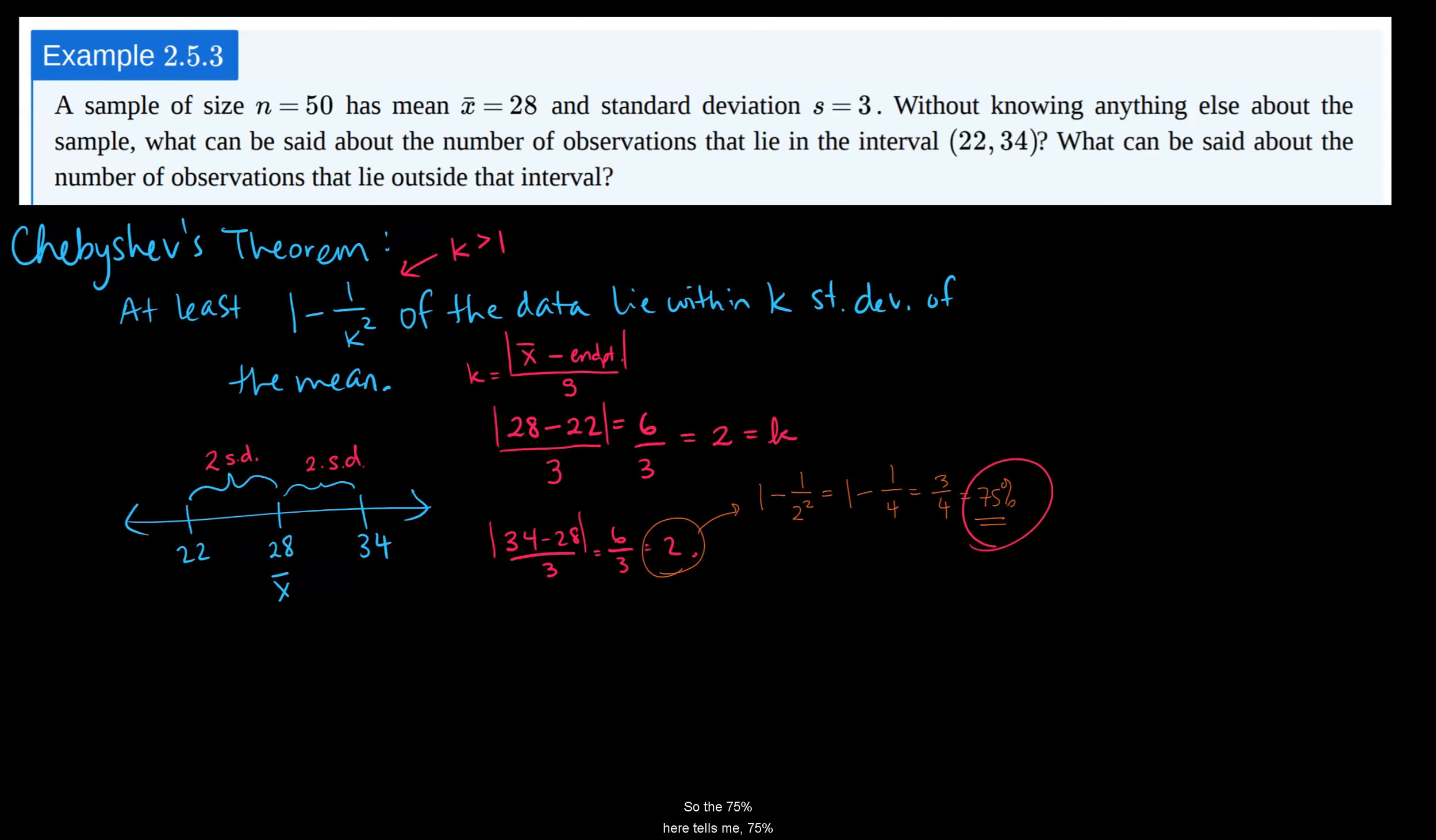So the 75% here tells me 75% of the data lies between 22 and 34. Or, since we know the sample size is 50, we can multiply 75% of 50,